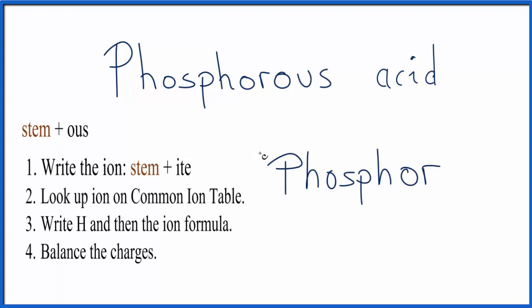But phosphorus is a bit of an exception. We don't include the or in the stem. So we'll have phos, we add ite instead of the ous, and this is called the phosphite ion, and we can look this up on the common ion table.